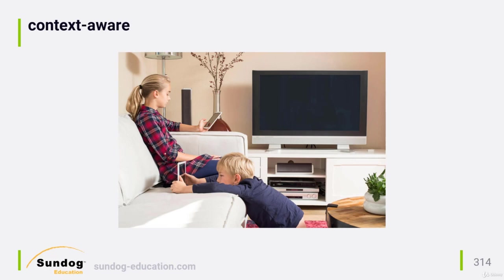The time might make a difference as well. You might be open to more mature content late at night than you would in the afternoon when the kids are around. Even the day of the week might matter — you may be looking to kill more time on the weekends, and so you might prefer movies on weekends over TV shows during the week. These are all examples of the context in which you are seeking recommendations, and a good recommender system will use all of this information to refine the results it returns.